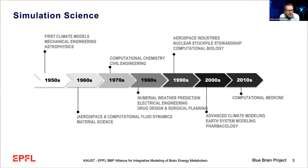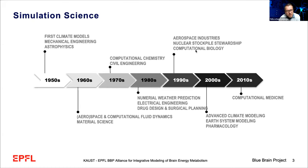I want to start with something close to my heart: how modern electronic programmable computers have really changed and augmented the way we do science. This is a story with 70 years of history, really with the onset of modern computers around the end of the Second World War. With every decade and these computers becoming more powerful, different disciplines in science and engineering were able to use those tools. In the beginning, these were simple mechanical models; at some point we could do weather forecasts, at some point we could test nuclear weapons without having to explode them.